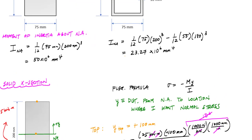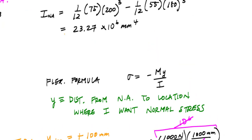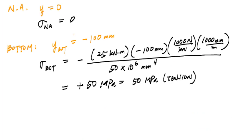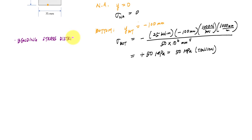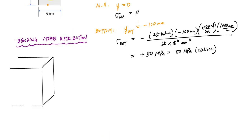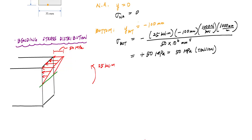Looking at the flexure formula, M and I are constant over the cross section, so bending stress varies linearly with respect to Y. I can draw a bending stress distribution, which is a 3D plot. Here's the cross section with the moment acting on it — the neutral axis is right in the middle, really a neutral axis plane. At the very top, compression has an intensity of 50 MPa, varying linearly to zero at the neutral axis. At the very bottom, tension has an intensity of 50 MPa. The blue arrows pull away from the surface (tension) while red arrows push into the cross section (compression).